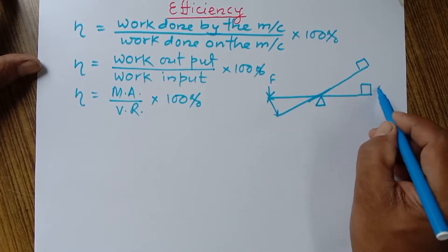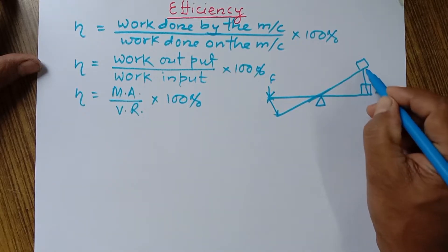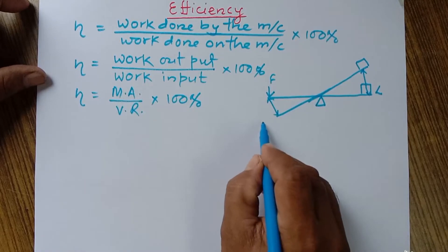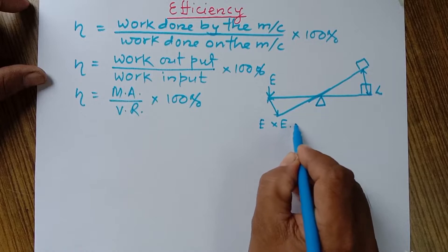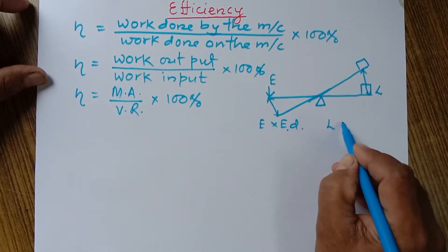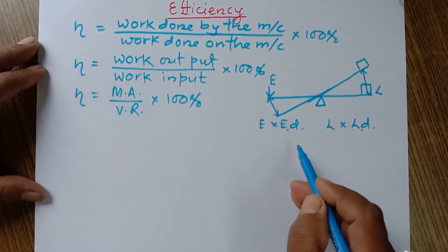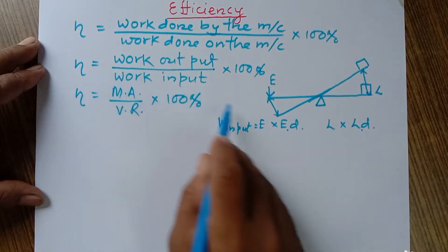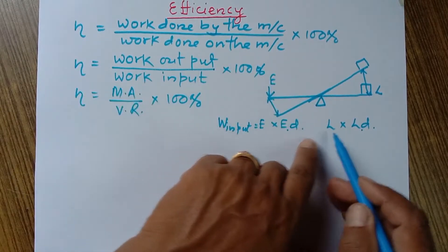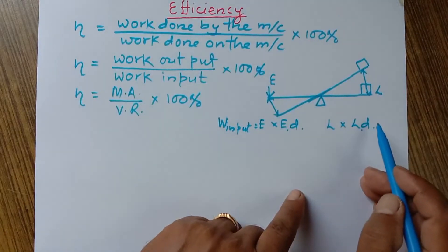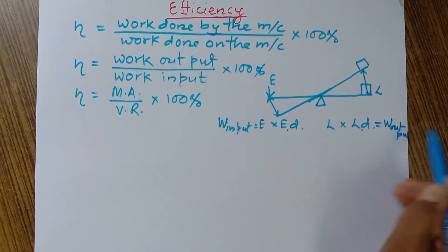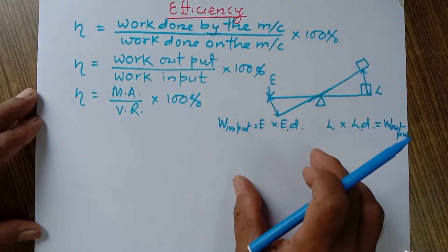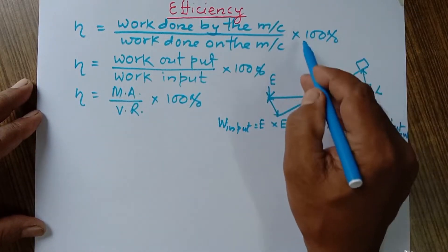As a result of the work done on the machine, the load is raised to a certain height, so there is also displacement in the load. The effort times effort distance is the work input, and the load times load distance is the work output — also called work done by the machine. The ratio of these two quantities is the efficiency, and if expressed in percentage we multiply by 100.